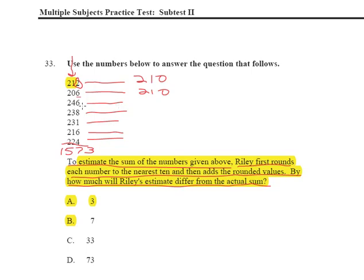246, that 6 right here means that we'll round this one up to 250. 238, that's going to become 240. 231, notice we'll be rounding down, so that's going to be 230.